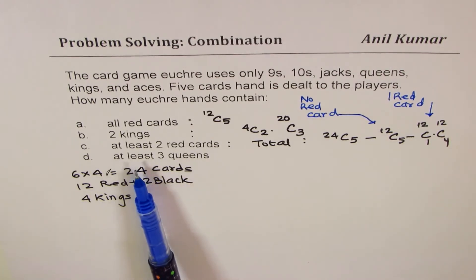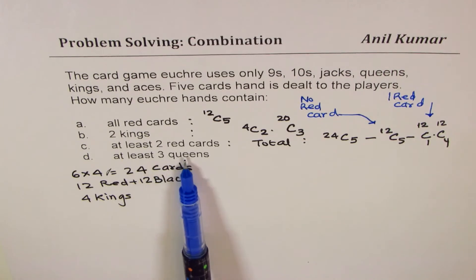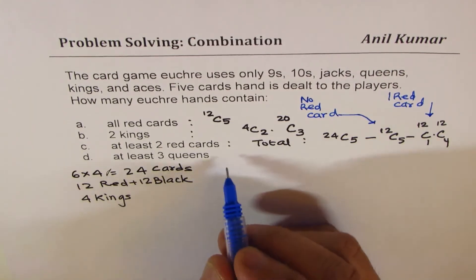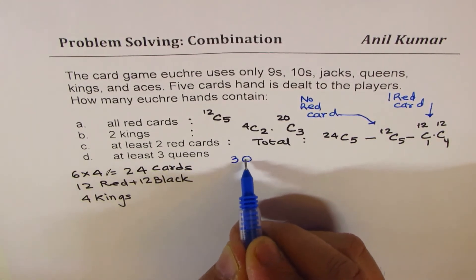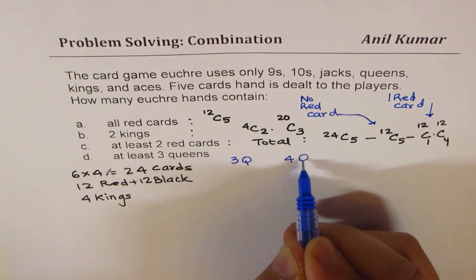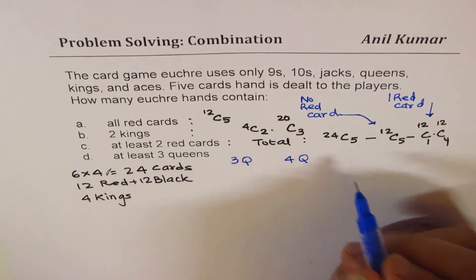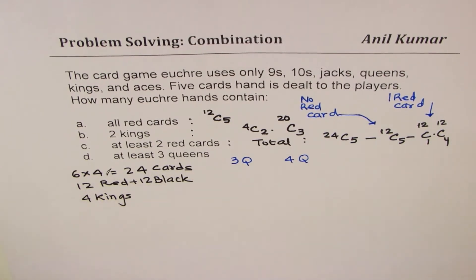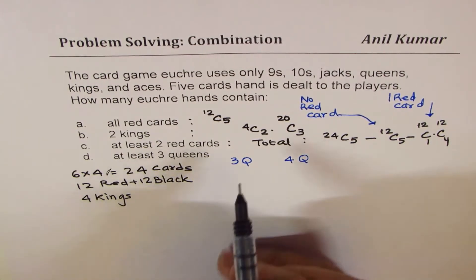Now the last one here is at least three queens. At least three queens means you get three queens, four queens, or five queens. So now we are looking for combinations of three queens, four queens, or all five. You can never get all five. So these are the two combinations. So that is only two ways.